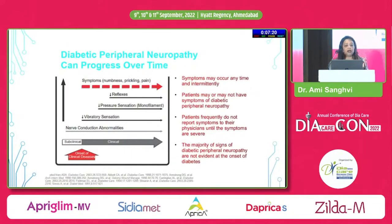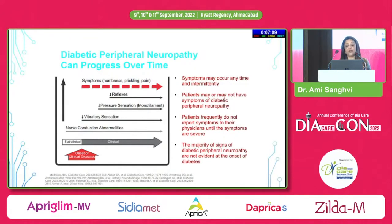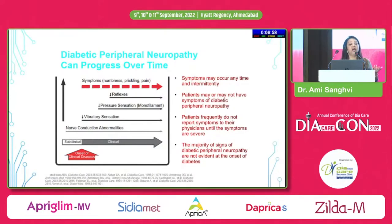Diabetic neuropathic pain can progress over time, occurring intermittently or continuously. Patients may not discuss this pain voluntarily, so physicians need to proactively ask about tingling and numbness to identify diabetic neuropathy, along with appropriate testing.